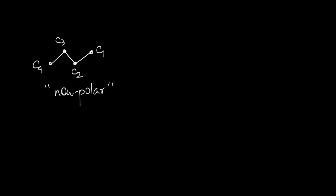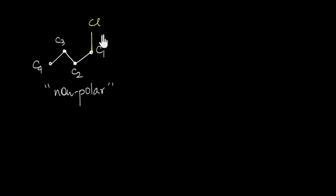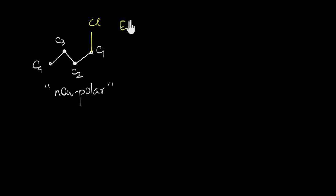Now let's see what happens if we add a chlorine atom to this butane molecule. The electrons in this carbon-chlorine bond are attracted to two non-identical atoms, so the force of attraction is not equal and opposite. The electrons will be either closer towards the chlorine atom or towards the carbon atom. If your answer is chlorine, you're absolutely right.